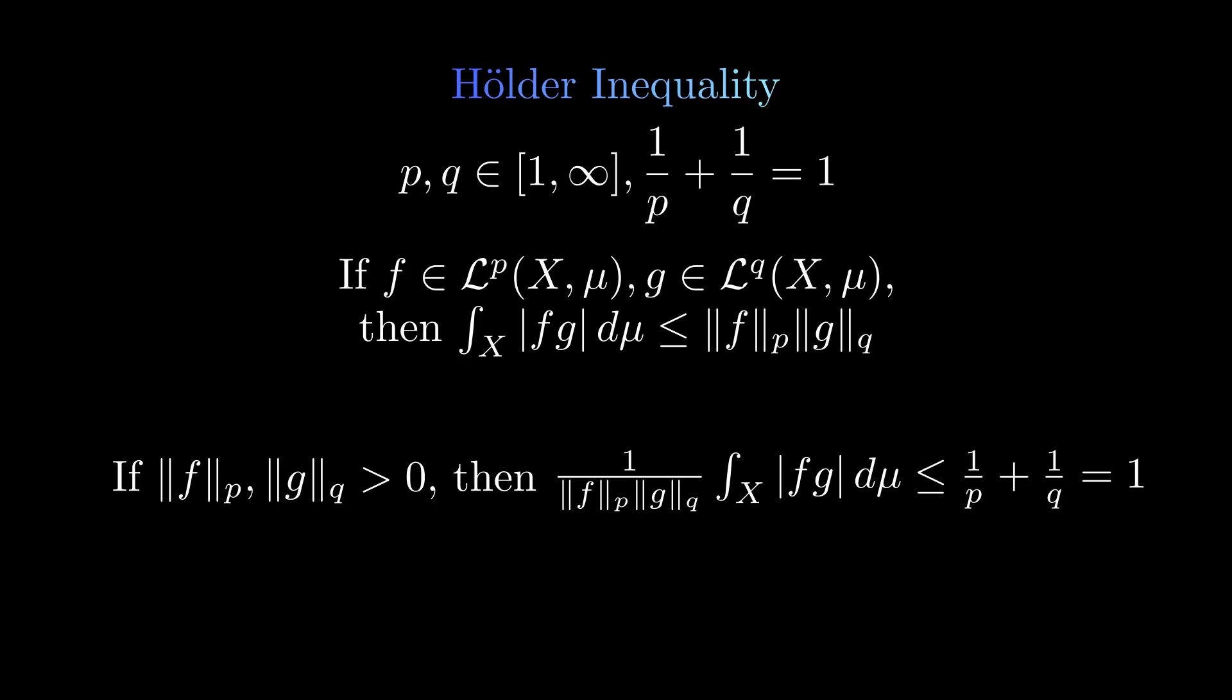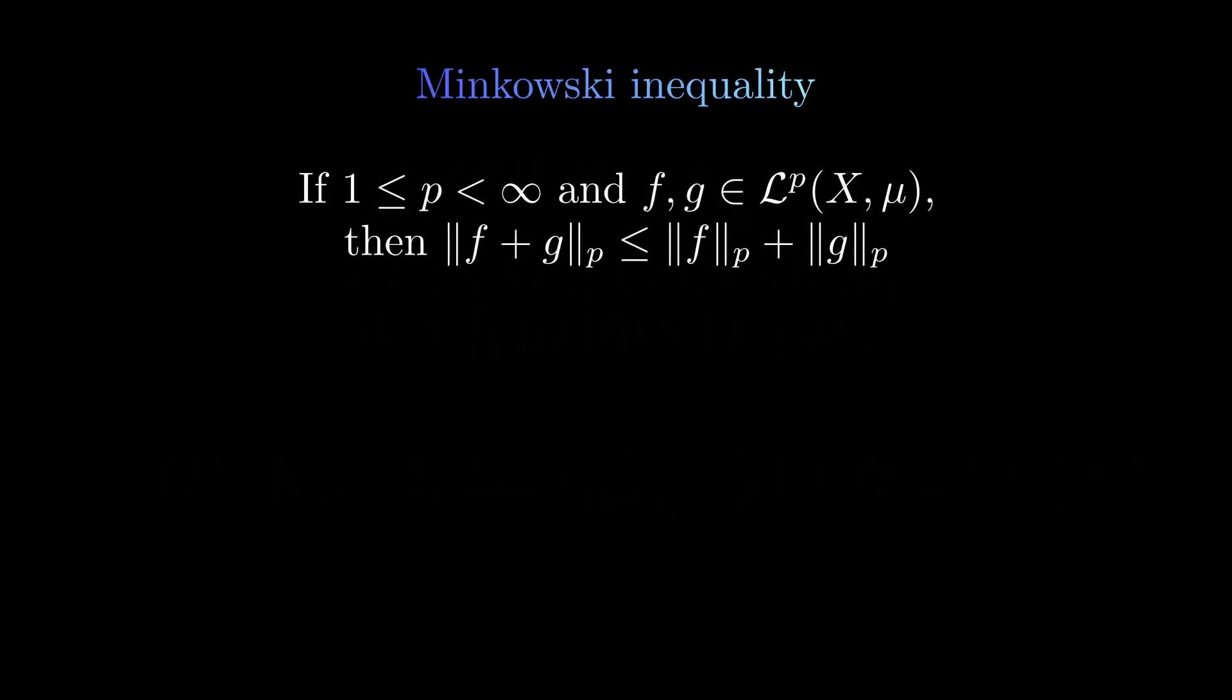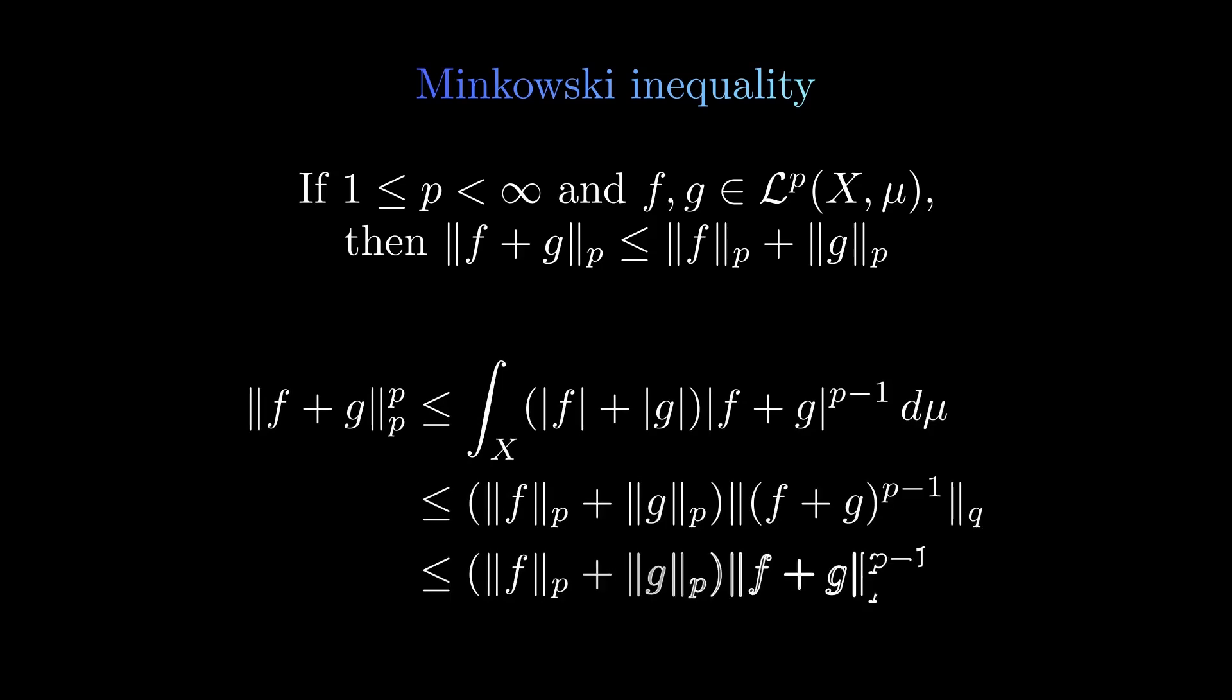Finally, we are able to prove that p-norms satisfy the triangle inequality. This result is called the Minkowski inequality. Now, let's prove this inequality. We do this by introducing the conjugate to p and using the Hölder inequality.